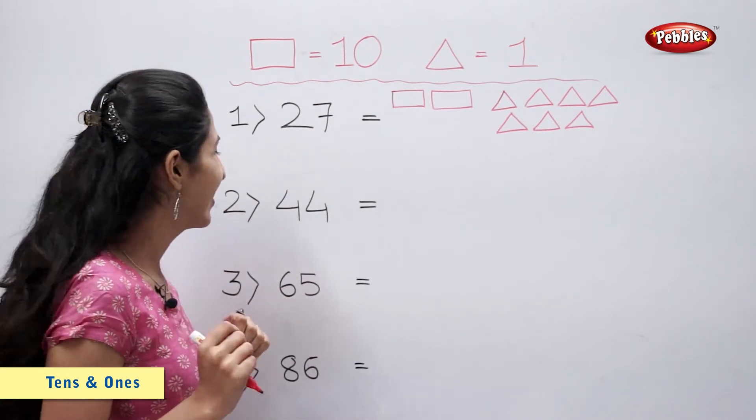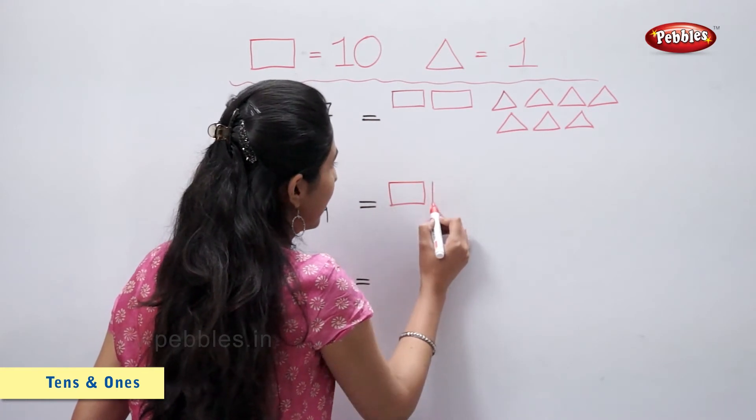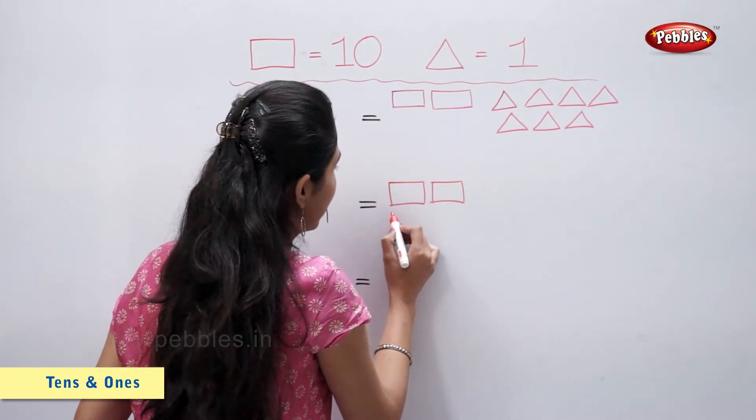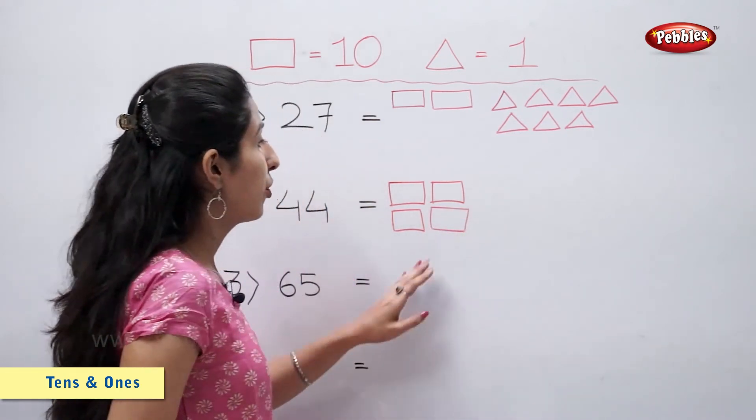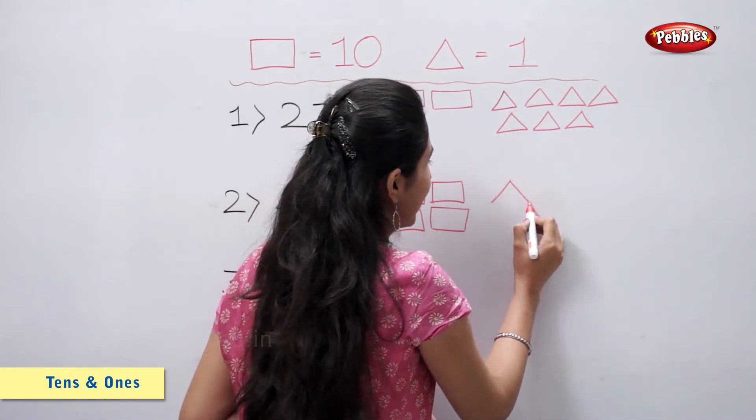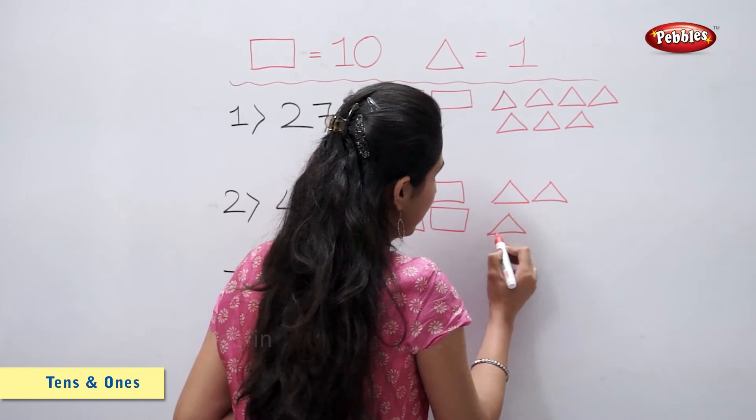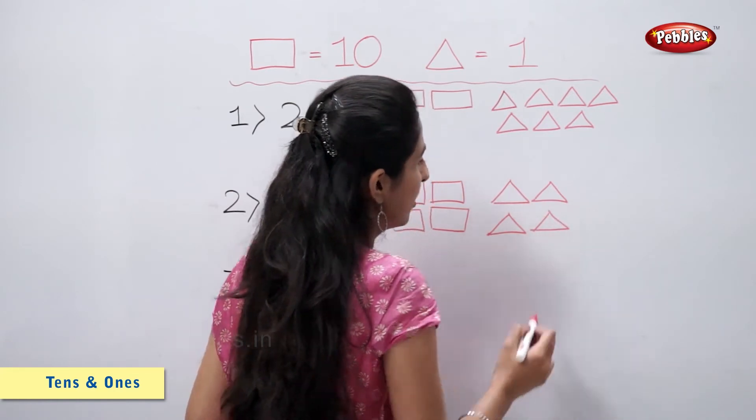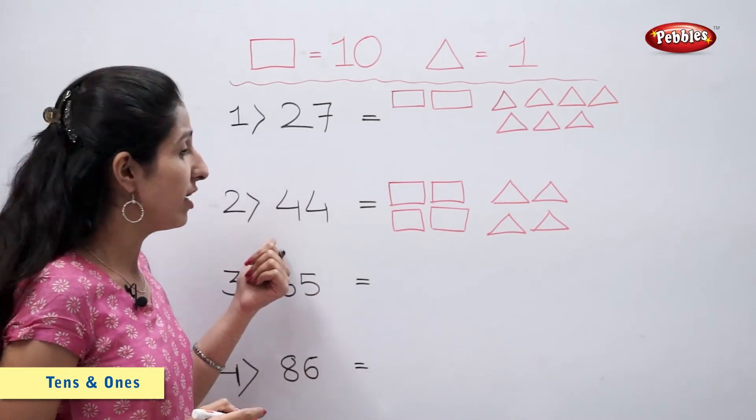Let's draw. 4 rectangles, 4 triangles. That is number 44.